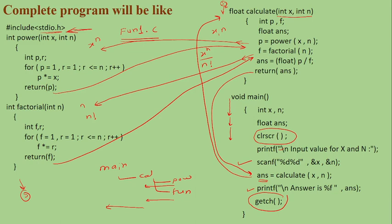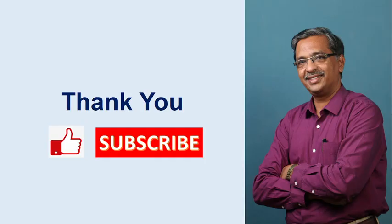So you have understood this concept: function call within function. Read value of x and n in main program, calculate x raised to n divided by n factorial using function call within function, and print the result in main program. Create a separate function to calculate x raised to n, and create a separate function to calculate factorial. This is how the question may appear. If you have not subscribed to my channel, please subscribe. If you like this video, please click the like button and click on the bell icon. Thank you.